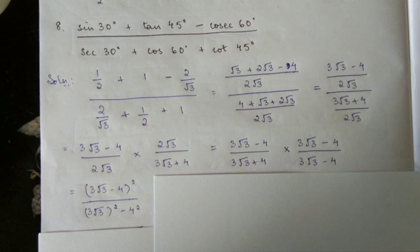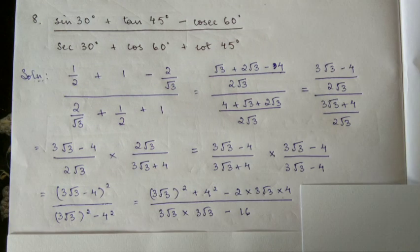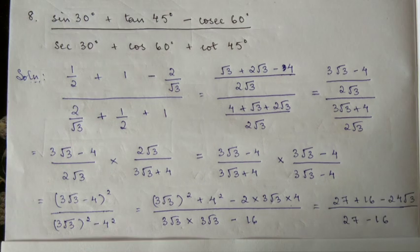To rationalize the denominator, when we have plus, we multiply by minus: 3 root 3 minus 4 divided by 3 root 3 minus 4. This gives 3 root 3 minus 4 whole square on top.